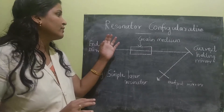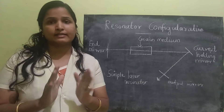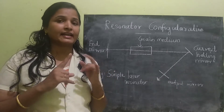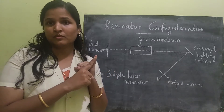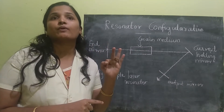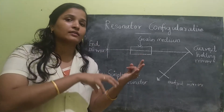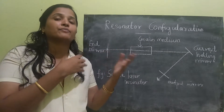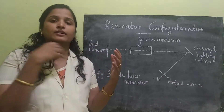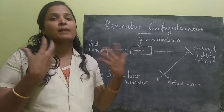First, before configuring the resonator, we should know what a laser resonator is. As I told in the previous class, a laser resonator is a device that contains three components: first, the pumping system; second, the active medium; and third, the mirrors and reflectors. From the pumping light, the active medium gets excited and laser radiation is produced, which reflects back and forth between the mirrors and gets multiplied.